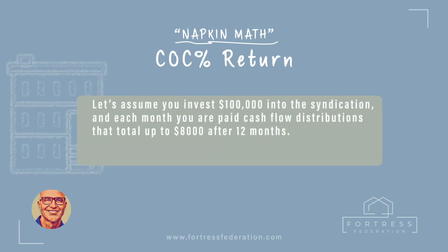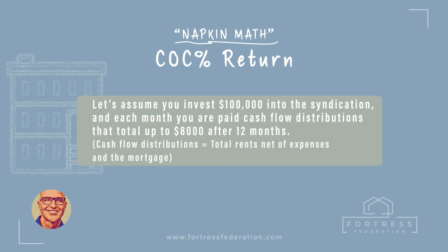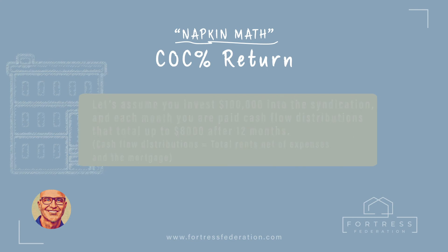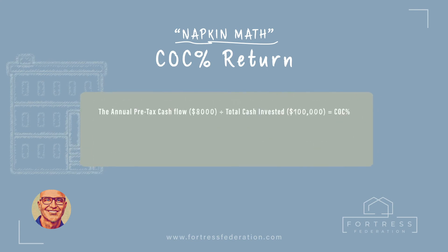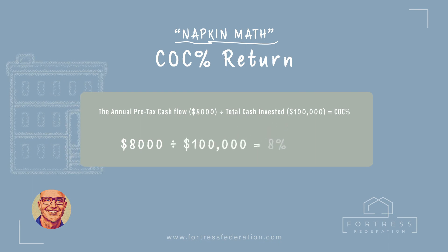Let's assume you invest $100,000 into the syndication, and each month you are paid cash flow distributions that total up to $8,000 after 12 months. Cash flow distributions equal total rents, net of expenses, and the mortgage. The annual pre-tax cash flow of $8,000, divided by the total cash invested of $100,000, equals an 8% cash-on-cash return.